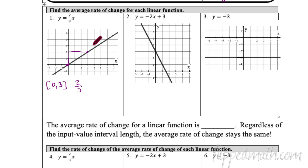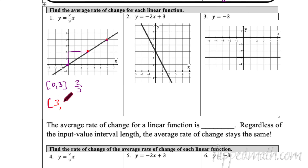Suppose you used different points — say the interval from 3 to 6. You still go up 2 and over 3, so you still get 2/3 as the average rate of change. Interesting — I got 2/3 for both intervals.